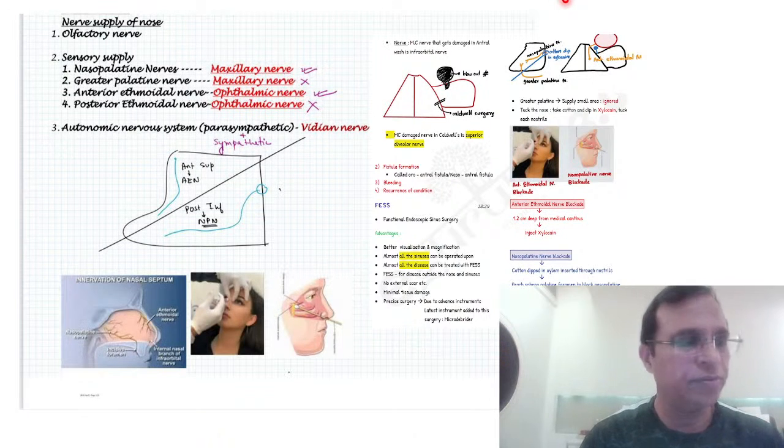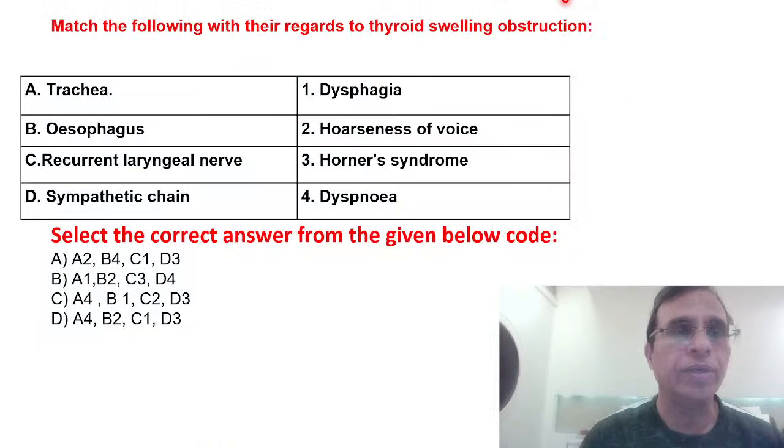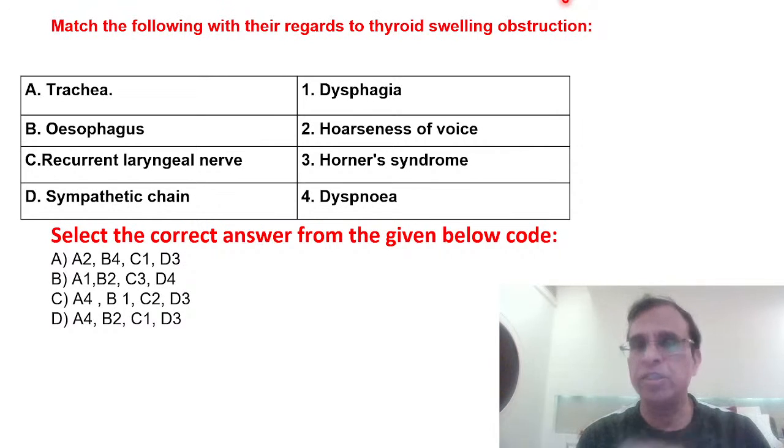Next one was regarding thyroid swelling obstruction, asking which structure obstruction will cause what symptom. Match the columns. First column: trachea, esophagus, recurrent laryngeal nerve, sympathetic chain. Second column: dysphagia, hoarseness of voice, Horner syndrome, dyspnea.